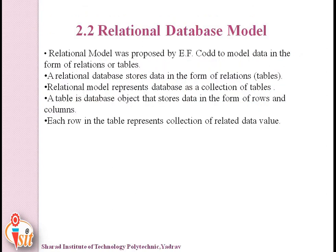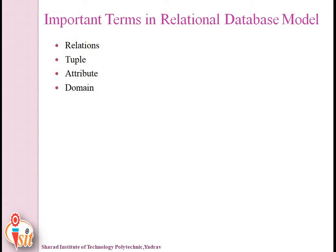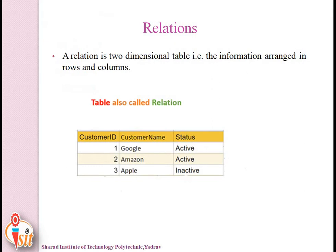The relational database model was proposed by Edgar F. Codd to model data in the form of relations or tables. A relational database represents the database as a collection of tables. The table is a database object that stores data in rows and columns; each row represents a collection of related data values. A relation is a two-dimensional table where information is arranged in rows and columns.